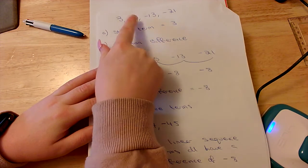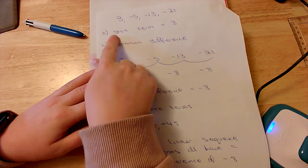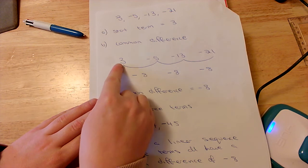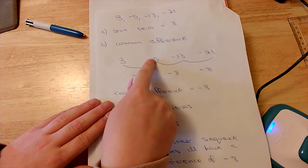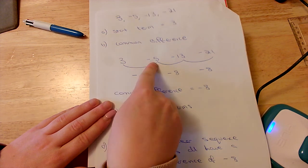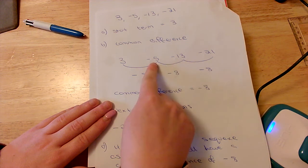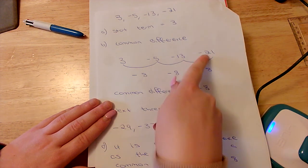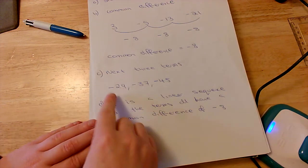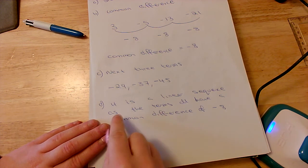The next sequence was 3, minus 5, minus 13, minus 21 - we can see we're going down. My start term is 3. For the common difference: to get from 3 to zero is three, and from zero to minus 5 is five, so the difference is minus 8. The difference between minus 5 and minus 13 is minus 8, and between minus 13 and minus 21 is minus 8 as well. My common difference is minus 8, the next three terms are minus 29, minus 37, minus 45.